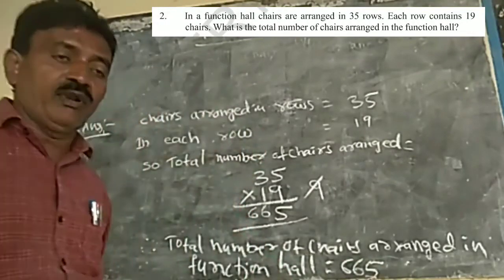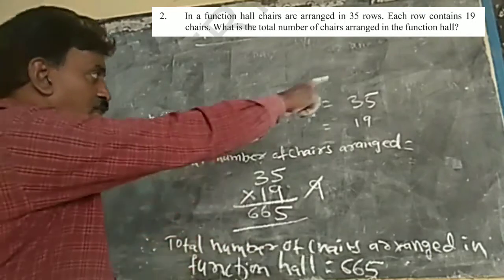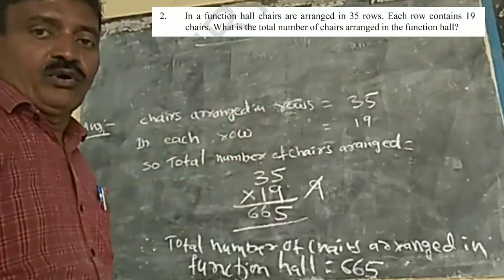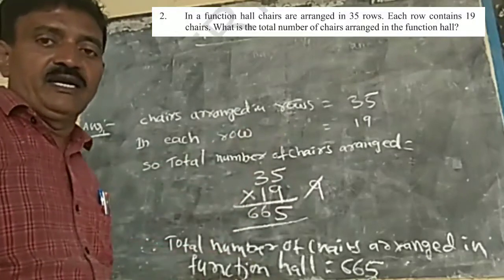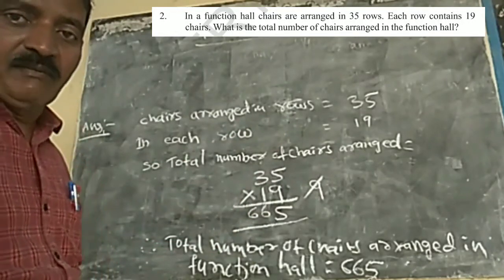So you have to do like this. First, you write the rows and each row. How many chairs? 19. So simply, you can simplify into 19. Multiplication is nothing but addition.